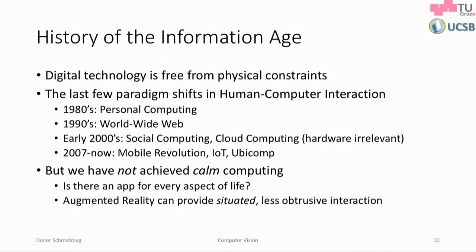Looking at the last few paradigm shifts in human-computer interaction: the last one was the mobile revolution from 2007 when the first iPhone came out. In the 1980s was personal computing — the shift to the desktop where people saw an opportunity for using computers in their own homes. The next disruption came in the 1990s with the thorough networking of computers, becoming prevalent everywhere through the World Wide Web, from roughly 1993 to 1995.